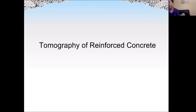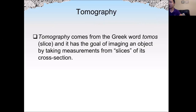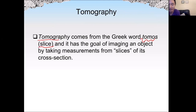The next method is tomography of concrete. We have probably heard about CT — computerized tomography — which is used in hospitals, but we can also apply it to concrete. The word 'tomography' comes from the Greek word 'tomo,' meaning slices. We use x-ray, or sometimes gamma ray, to take slices of the specimen — in our case, concrete — and then reconstruct a 3D image of the specimen with the help of a computer, which is why it is called computerized tomography or CT.